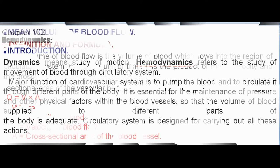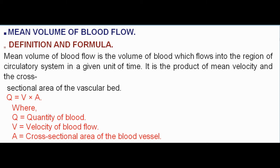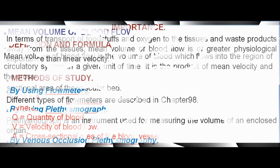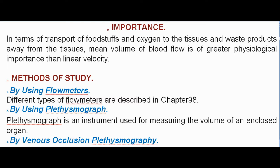Mean volume of blood flow — definition and formula. Mean volume of blood flow is the volume of blood which flows into a region of the circulatory system in a given unit of time. It is the product of mean velocity and the cross-sectional area of the vascular bed: Q equals V times A, where Q equals quantity of blood, V equals velocity of blood flow, and A equals cross-sectional area of the blood vessel. In terms of transport of foodstuffs and oxygen to the tissues and waste products away from the tissues, mean volume of blood flow is of greater physiological importance than linear velocity.